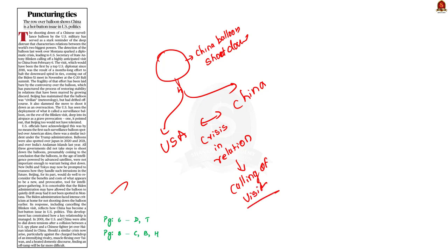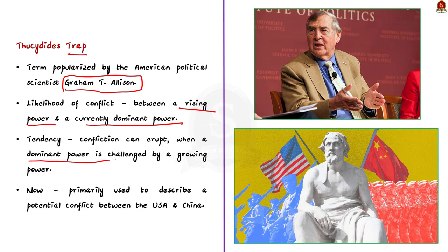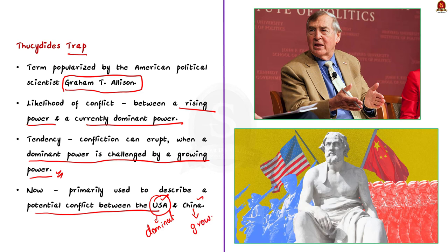In this context, let us understand about the Thucydides Trap. The Thucydides Trap is a term popularized by American political scientist Graham T. Allison to explain the likelihood of conflict between a rising power and a currently dominant one. The trap refers to the tendency in which conflict can erupt when a dominant power is challenged by a growing power. It is now primarily used to describe the potential conflict between the United States and China, where the USA is the dominant power and China is the growing power.